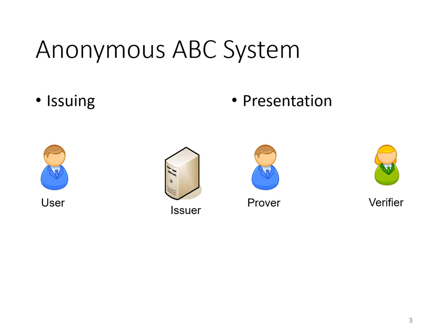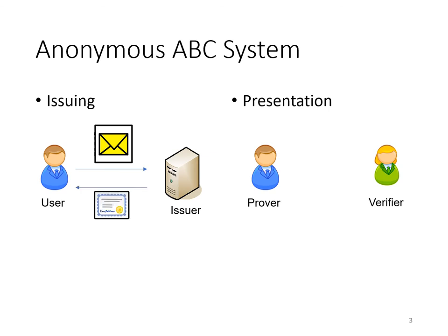An anonymous credential system has two protocols: the issuing protocol and the presentation protocol. In the issuing protocol, the user approaches an authority to get the authority to sign on his private information in an anonymous way. The private information is gender, name, ID, role, and branch. The user first masks this attribute set and sends it to the issuer who is the authority. The issuer first checks that this mask is correctly generated and signs on the masked attribute set blindly. The signature produced by the issuer will be used by the user as the credential.